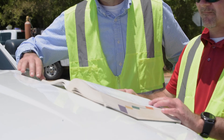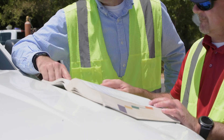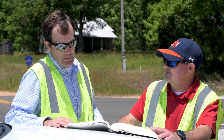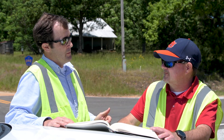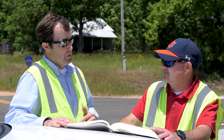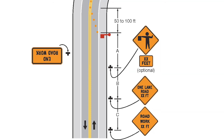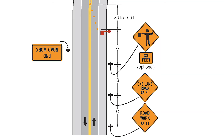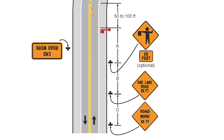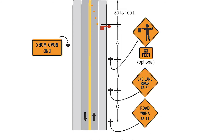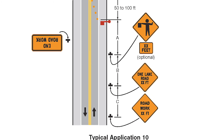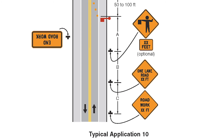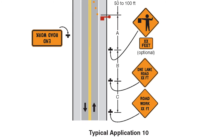The MUTCD provides TTC layouts designed for uniform and efficient operation and to minimize the occurrence of crashes. For a lane closure on a two-lane road using flaggers, we refer to Typical Application 10 from Chapter 6H of the MUTCD. As we can see, the Advanced Warning Area — the section of highway where road users are informed about the upcoming work zone — is comprised of three signs.